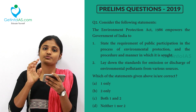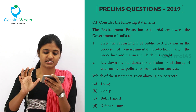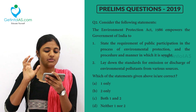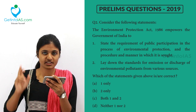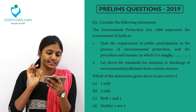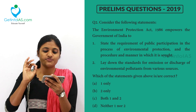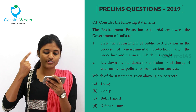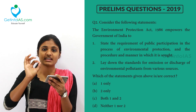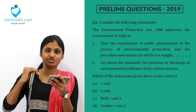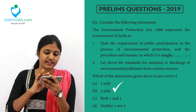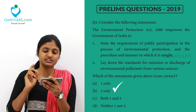The first option is wrong because public participation in environmental protection does not come in the Environment Protection Act — it comes in the Environmental Impact Assessment. The second statement says it lays down the standards for emission or discharge of environmental pollution from various sources. For example, if there is an industry, it sets standards for the amount of emission coming out. So the second option is correct, and option B — two only — is the correct answer.